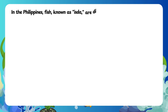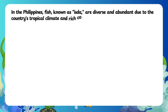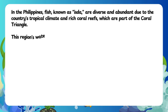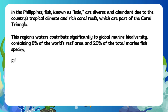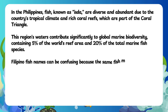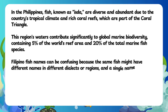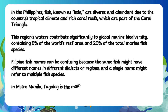In the Philippines, fish, known as ISDA, are diverse and abundant due to the country's tropical climate and rich coral reefs, which are part of the Coral Triangle. This region's waters contribute significantly to global marine biodiversity, containing 5% of the world's reef area and 20% of the total marine fish species. Filipino fish names can be confusing because the same fish might have different names in different dialects or regions, and a single name might refer to multiple fish species.